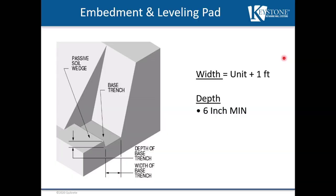Before we can talk about embedment, we must first talk about the gravel leveling pad utilized in the construction of the retaining wall. Here we have a simple schematic showing an excavation for a retaining wall. The width of the leveling pad is approximately the depth of the unit measured from face to tail plus one foot. So if we have a 12-inch deep unit, we have an approximately two-foot wide leveling pad. The depth of the leveling pad is always six inches minimum.